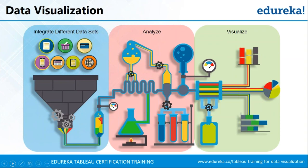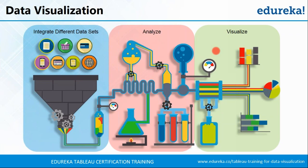Now let us understand how data visualization actually works. The first thing you need is a data set — it can be in the form of a text file, any kind of flat file, Excel sheets, or you can connect to any server or database. You can integrate and connect different data sets together. Then you analyze that data according to the parameters, using different formulas and algorithms. Finally, you carry out the visualization — choosing different charts, maps, graphs, or anything that fits your data set.